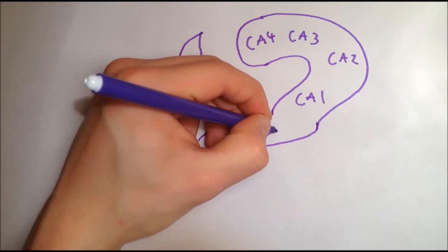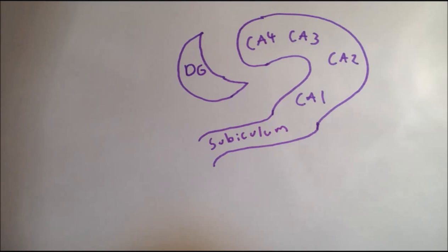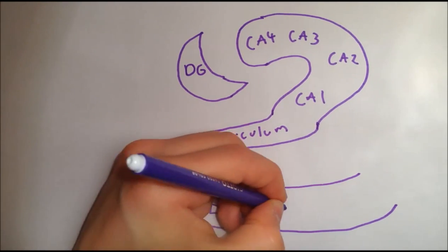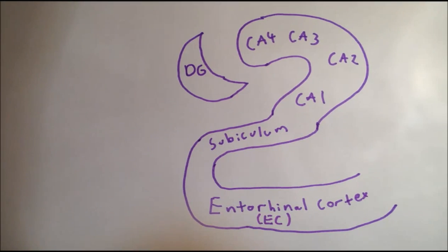The next area is the subiculum. This is continuous with the Cornu Ammonis areas, and is also composed of pyramidal neurons. The final area is the entorhinal cortex. This is an area of the cerebral cortex adjacent to the hippocampus.